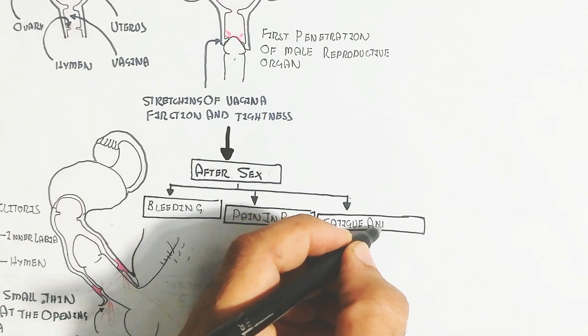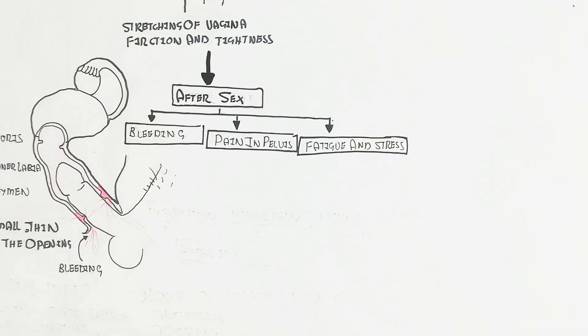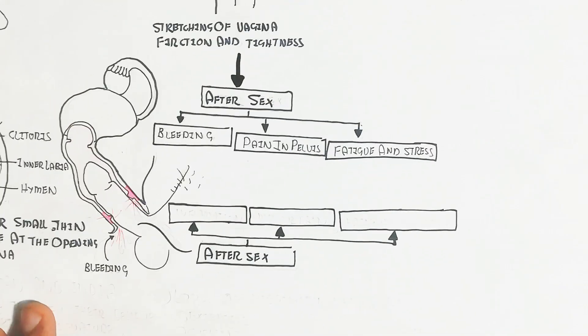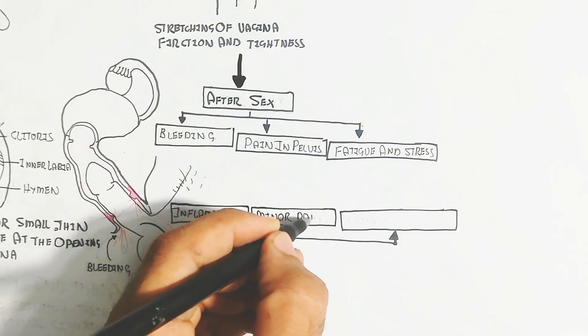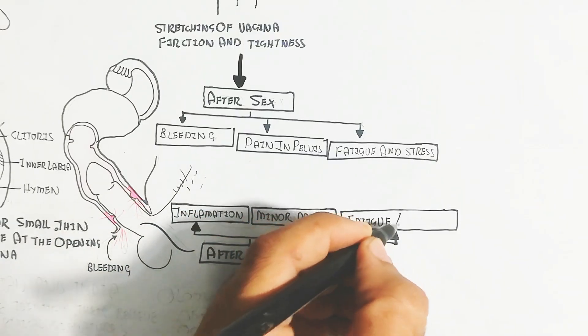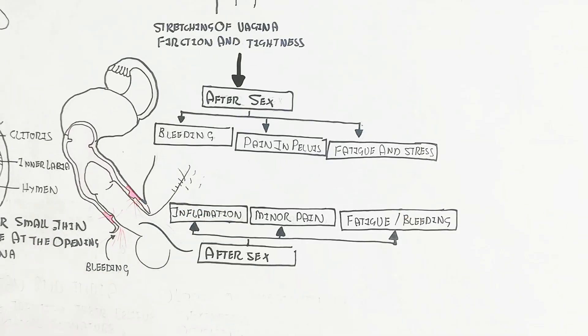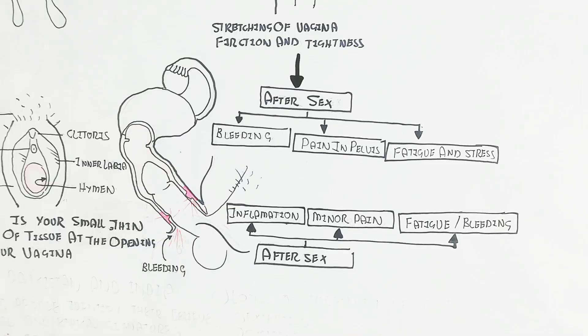After sex, females experience bleeding, pain in pelvis, fatigue and stress. For males, inflammation, minor pain, fatigue and stress in the reproductive system, the penis.